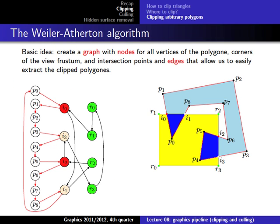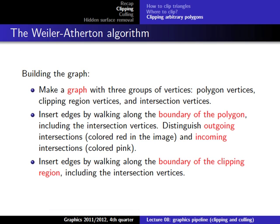This is why we have the second algorithm, called the Weiler-Atherton algorithm, which is a little more complicated but always produces the correct result. The basic idea is that we create a graph based on the polygon and the clipping area, where the nodes represent the vertices of the polygon, the clipping area, and the intersection points. We then enter edges into that graph in a way that makes it very easy to extract the new clipped polygons.